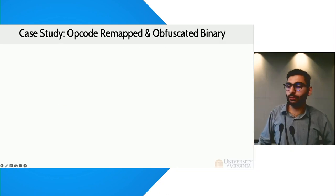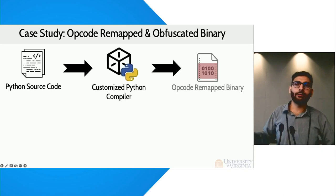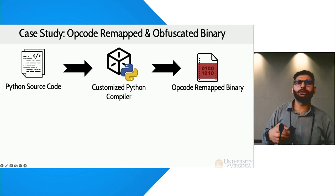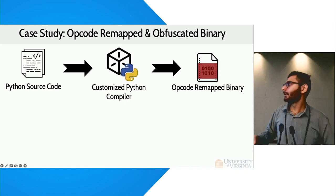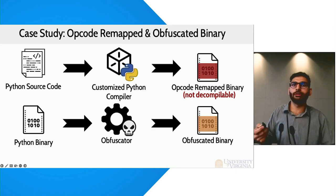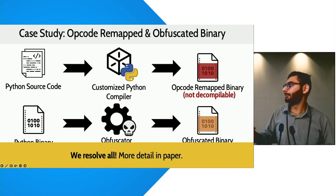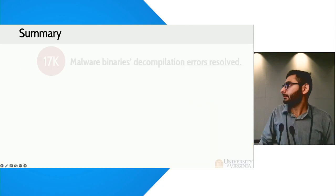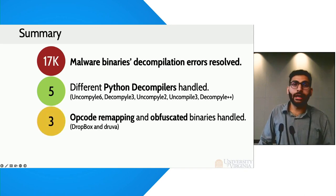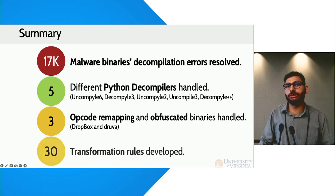We also encountered binaries using opcode remap or obfuscation. Opcode remap binaries are compiled using a customized compiler — used by companies like Dropbox to prevent reverse engineering — and are essentially not decompilable. There are also obfuscators like PJ Orion that change the control flow of the binary to obfuscate it. In our paper, we detail how we tackle these and make them decompilable. Overall, we resolved more than 17,000 errors across five different decompilers, handled opcode remap and obfuscated binaries, all with just 30 transformation rules. Thank you.